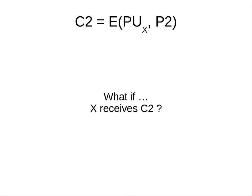If X receives C2, they can decrypt because they do have PRX. Now consider C3, encrypted with PRX. Y can decrypt it because they have PUX — and PUX is public. Encrypted with PRX, we can decrypt with PUX, and since PUX is the public key of X, Y has that. In other words, the message P3 is not confidential — anyone can see it, because everyone has everyone else's public key.